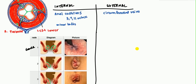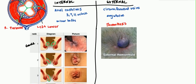Moving on to external hemorrhoids — these occur in the circumferential veins and can occur anywhere, without the same 3, 7, and 11 o'clock distribution. The biggest problem with external hemorrhoids is thrombosis. Here is an image showing an external hemorrhoid with a blue discoloration indicating thrombosis. The thrombosis can erode the skin, eventually leading to bleeding with bright red blood.